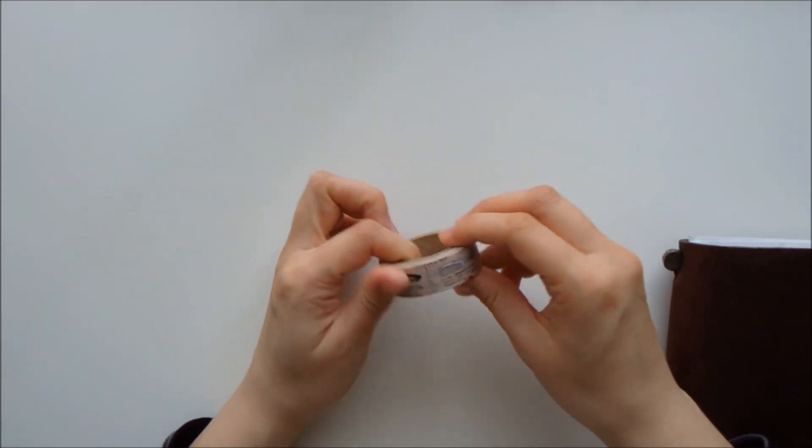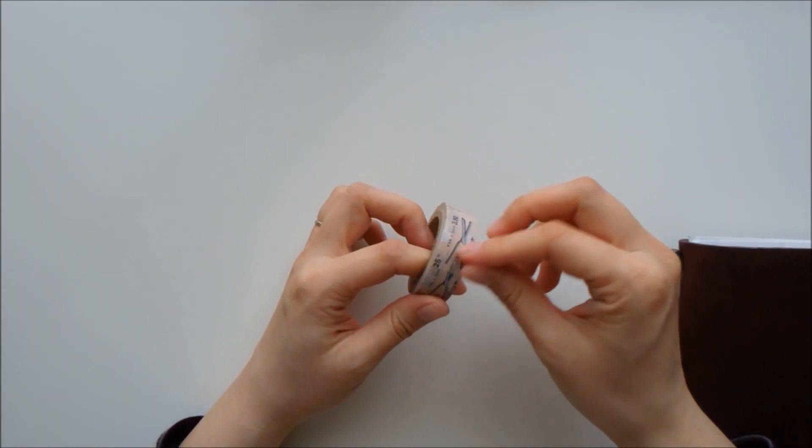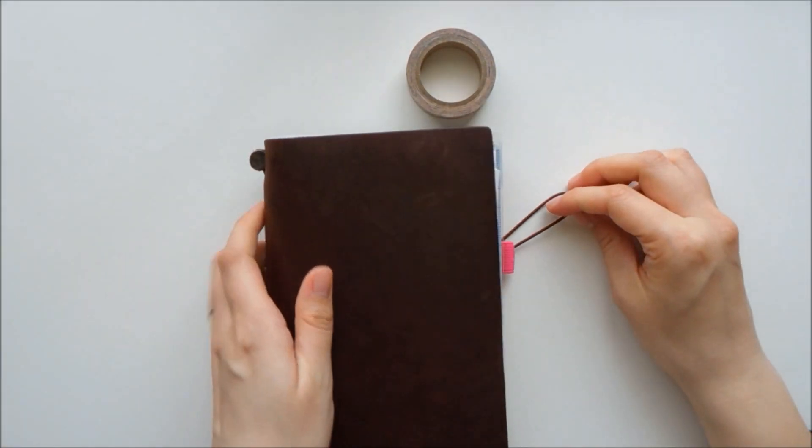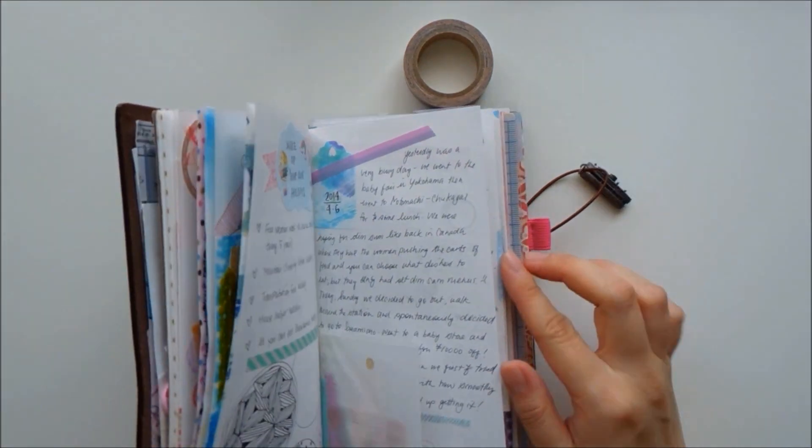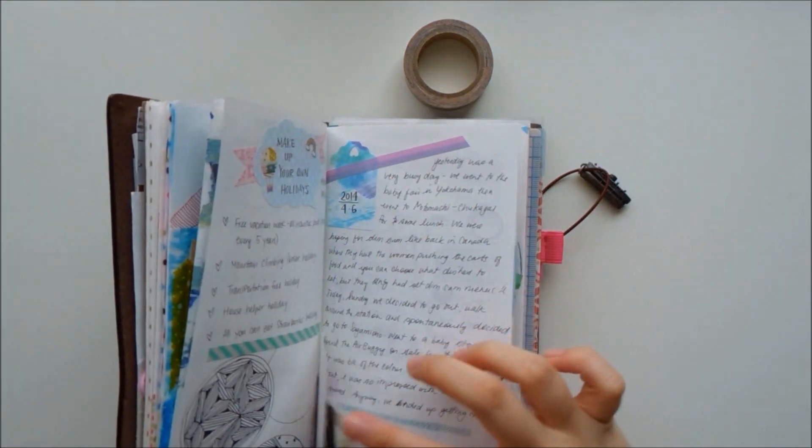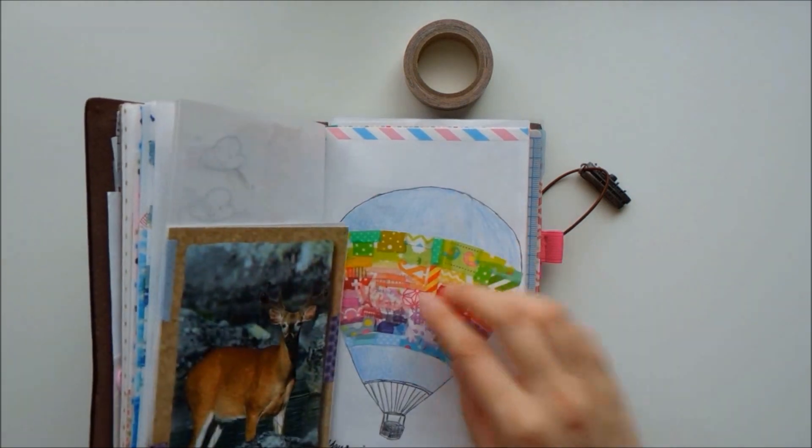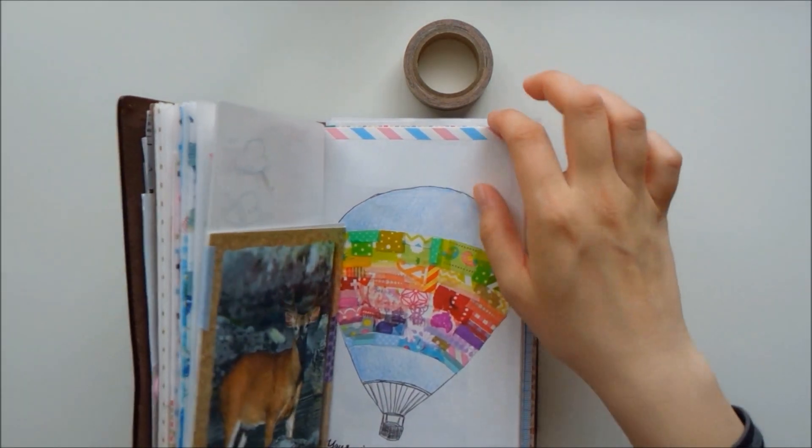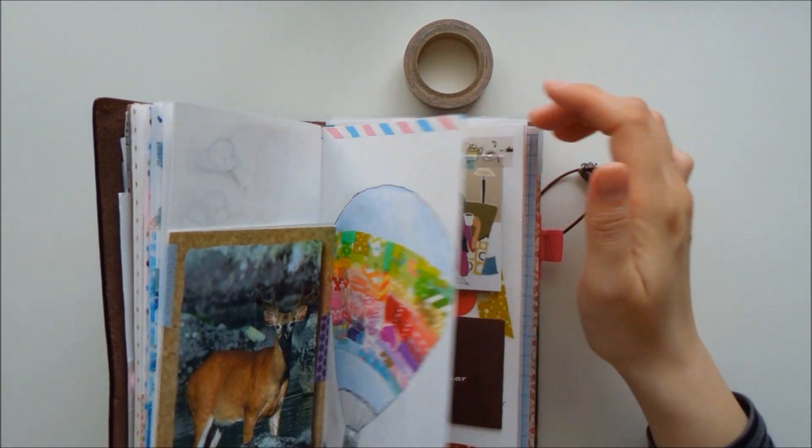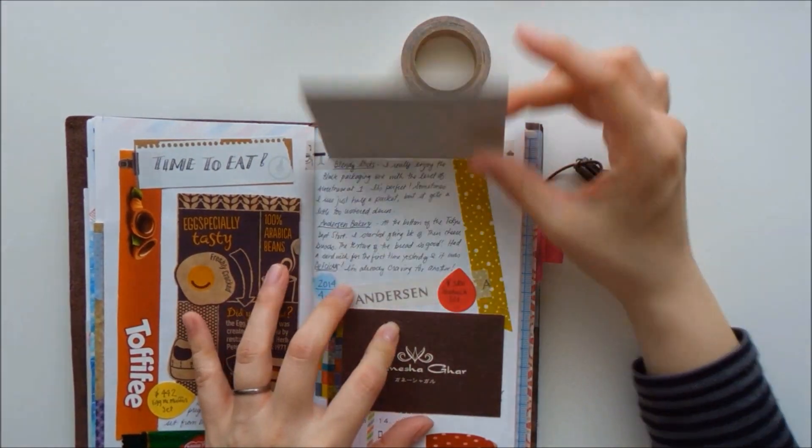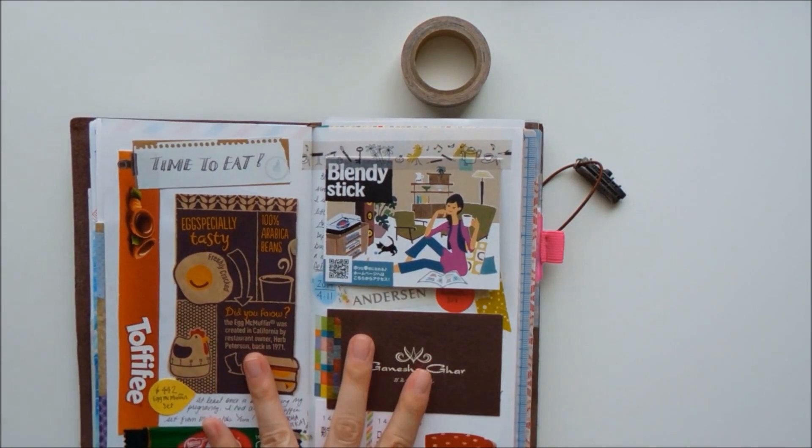First off for decorating, I love using washi tape. There's many purposes for washi tape, but the main reason in my traveler's notebook is to decorate. I like using it as a border and I also like to use washi tape to keep things in place. Here I use it for decorating. Here I've used it as a flap.